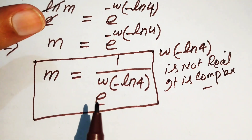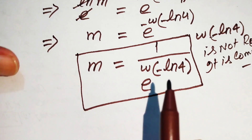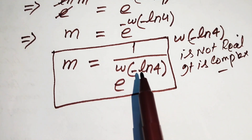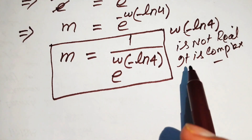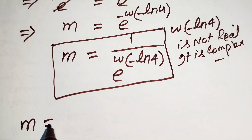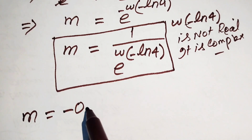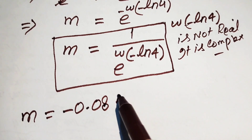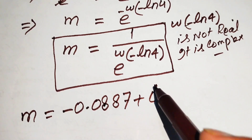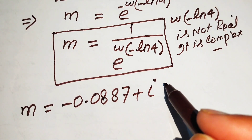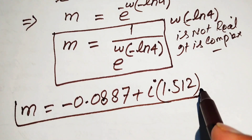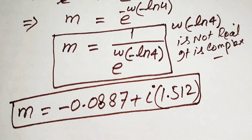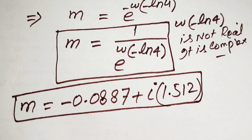We can use the numerical form of the Lambert W function to find the complex value. The result is m equals minus 0.0887 plus iota times 1.512. This is the complex value of this function and the final answer. Thank you so much for watching this video — please subscribe to my channel for more exciting videos.